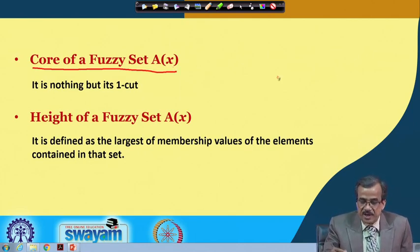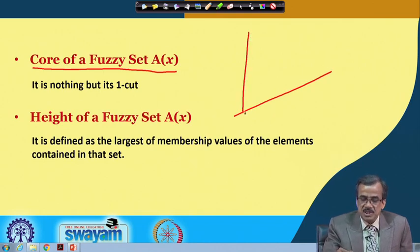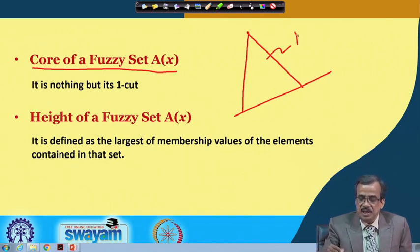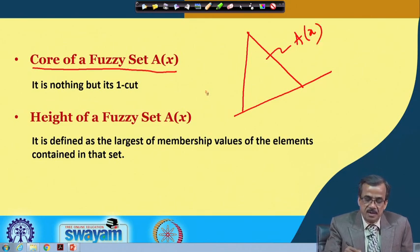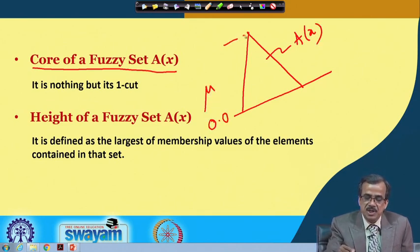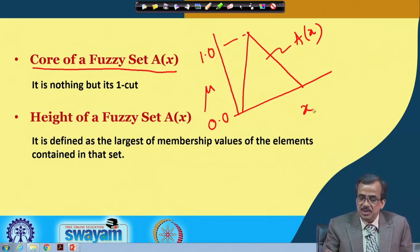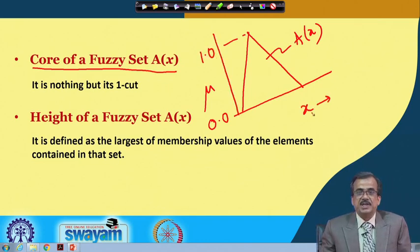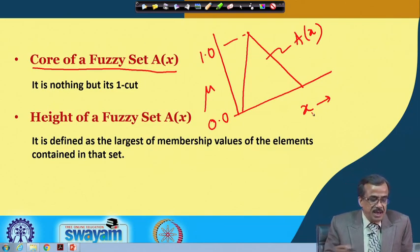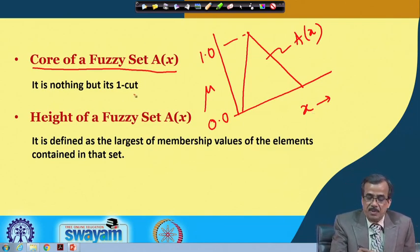Let me draw one fuzzy set here. This is the fuzzy set A(x) and mu is varying. This is 0.0, this is 1.0, and this is the x direction. Here, this is nothing but the one-cut.